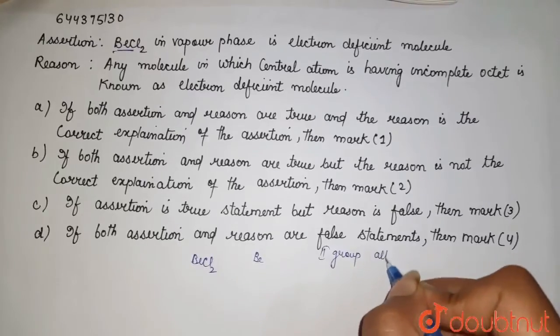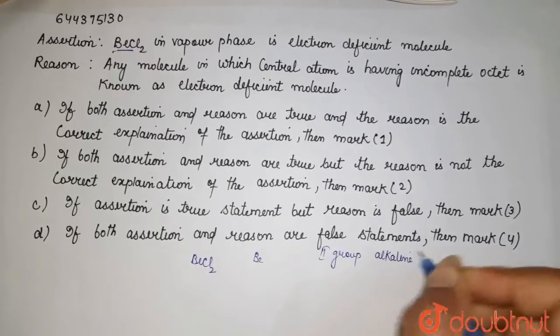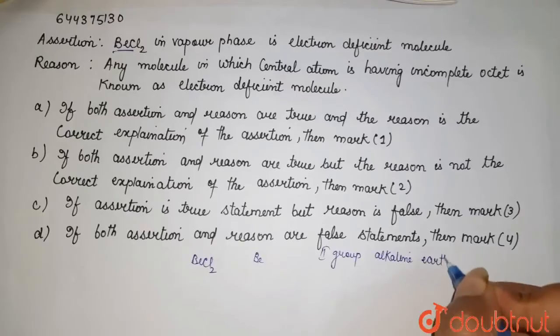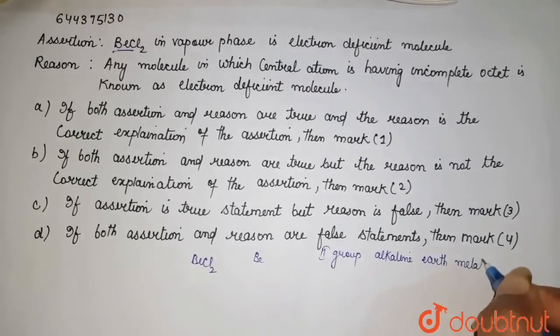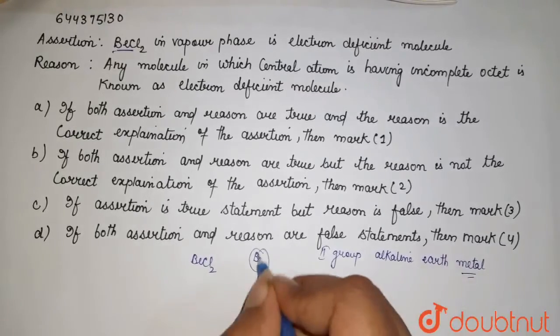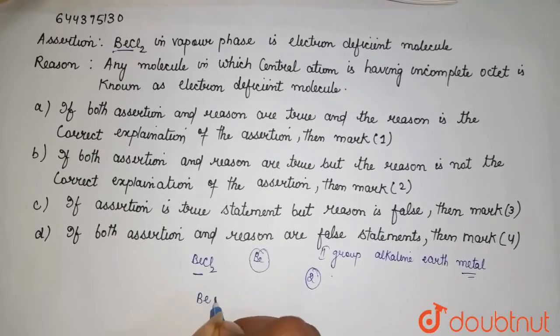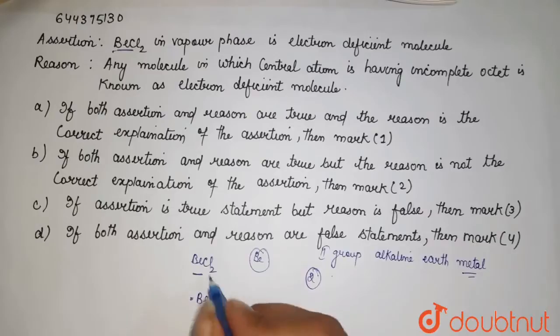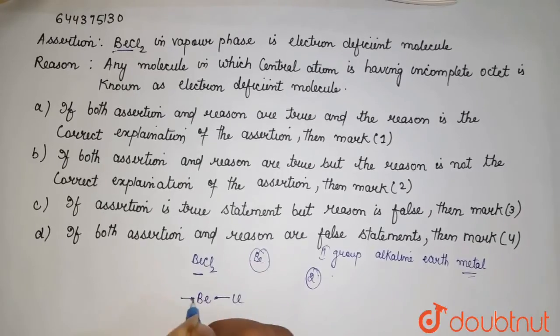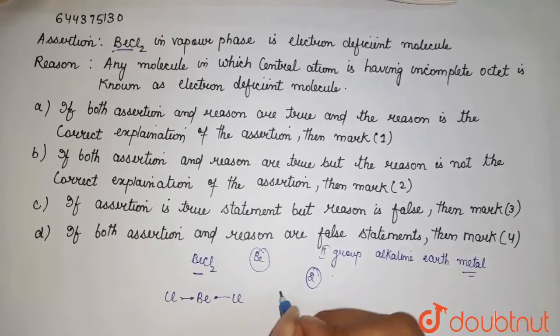It has outermost electron which is two. If I draw its diagram, here beryllium has two valence electrons. Here two chlorine, here it is one and here it is one.